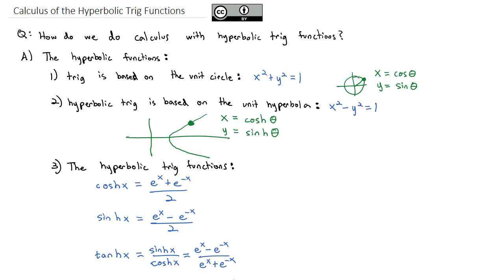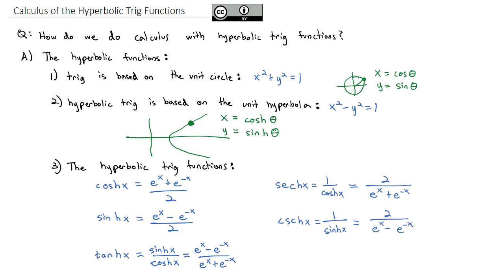In addition to the three basic hyperbolic trig functions, we also have the reciprocal functions. The hyperbolic secant is the reciprocal of hyperbolic cosine: 2 over e to the x plus e to the negative x. The hyperbolic cosecant is the reciprocal of hyperbolic sine: 2 over e to the x minus e to the negative x. The hyperbolic cotangent equals the hyperbolic cosine divided by the hyperbolic sine, giving e to the x plus e to the negative x over e to the x minus e to the negative x.